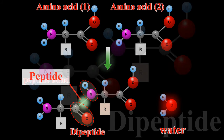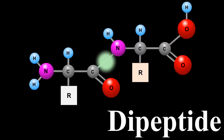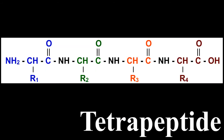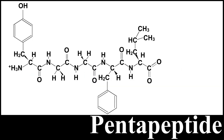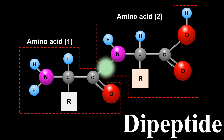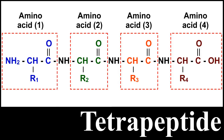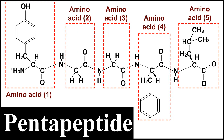Peptides are further designated as di, tri, tetra, or pentapeptides accordingly as they contain 2, 3, 4, or 5 amino acid molecules — same or different — joined together.